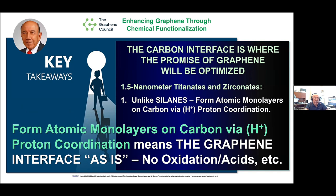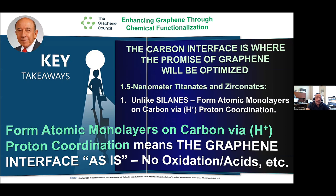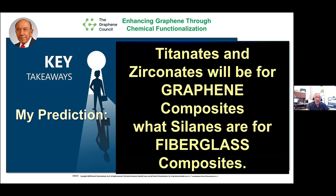This allows for stress transition from the interface of the graphene into the polymer phase, giving you better impact strength and better flexibility. All of this requires nano application techniques. You form atomic monolayers on the carbon interface via proton coordination — which means the graphene interface as-is, no oxidation, no acids, none of the stuff you have to do to get the graphene reactive. My prediction is that titanation and zirconate will be to graphene composites what silane is to fiberglass composites.